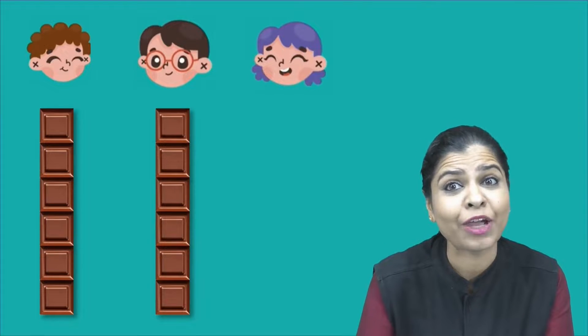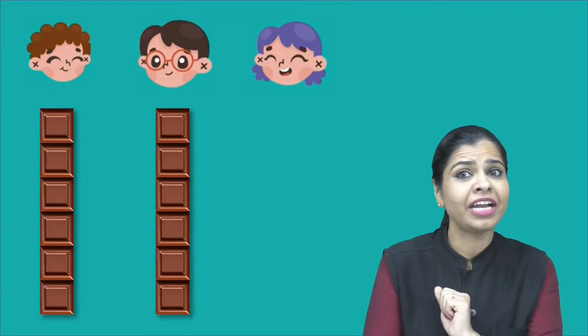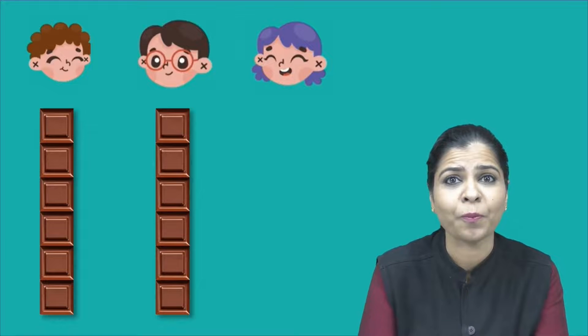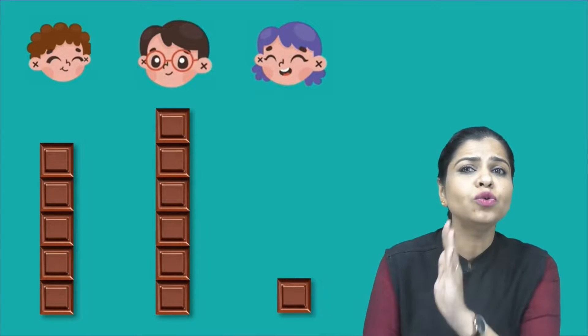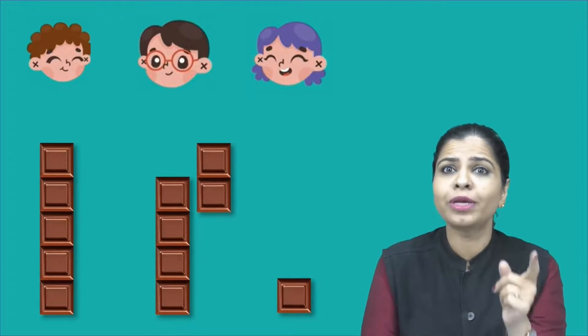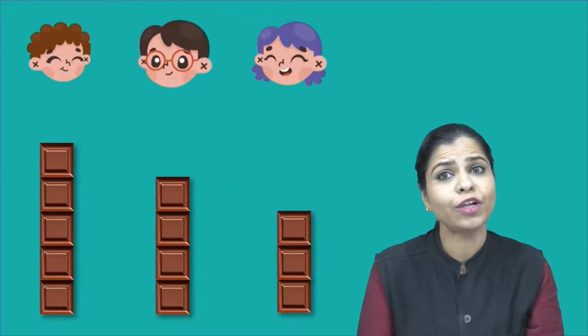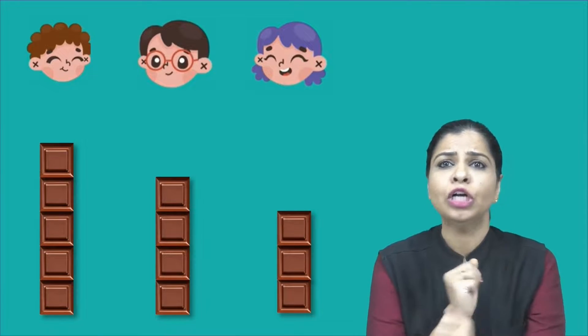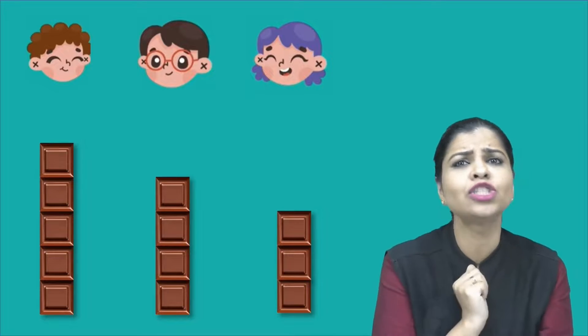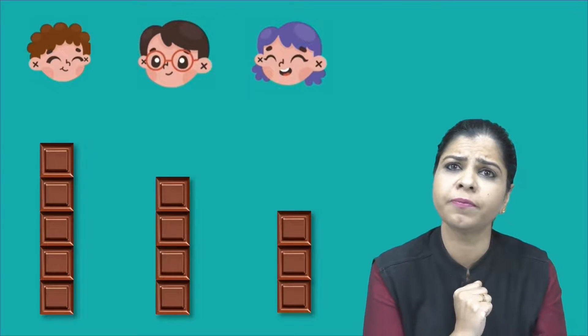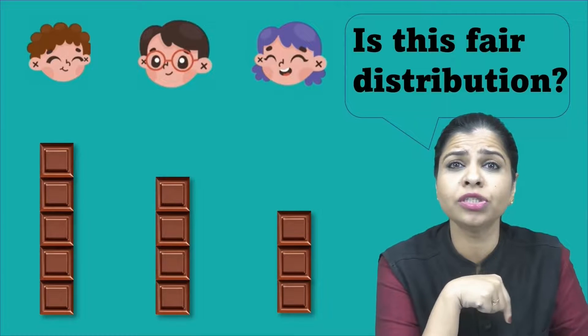Both are happy and just about to enjoy. They are caught by Tinku. They better share it with her else the teacher will know. So what do they do? Chintu gives one piece of chocolate to Tinku and Pinto gives two pieces of chocolate to Tinku. Now everyone has some amount of chocolate pieces, but do you think they have shared this chocolate equally among themselves? Do you think it is a fair distribution?